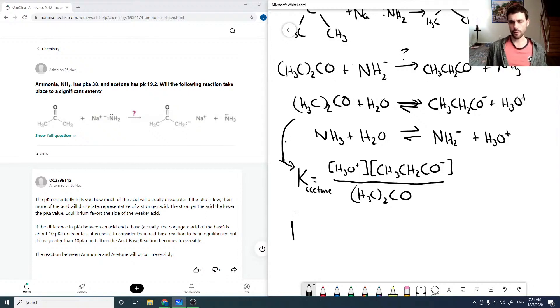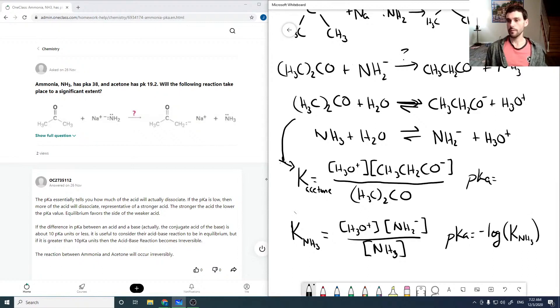So our K for our NH3 is H3O plus times NH2 minus over NH3. And so that's really the pKa that's being given there. So our pKa is the negative logarithm of our K_NH3, and our pK as it's given in the question there is the negative logarithm of this K_acetone. So just to write out exactly what we're being given.